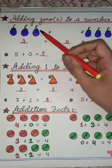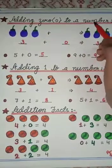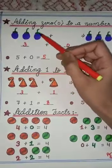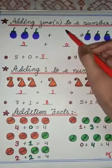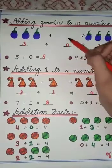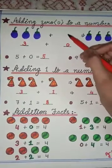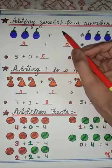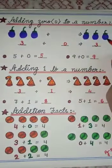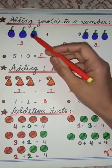First we have adding 0 to a number. What will happen if we add 0 to a number? So see here, here are some objects. If we add nothing to it, here we have nothing now children. I have not drawn anything here, that means nothing is here. So if we add nothing to any objects, then we will have the same number of objects which we had earlier.